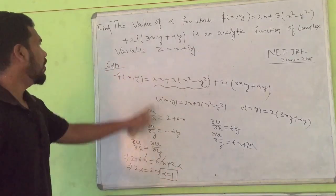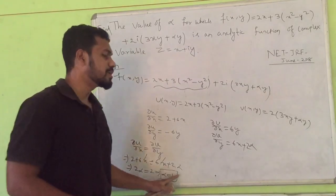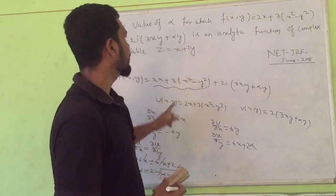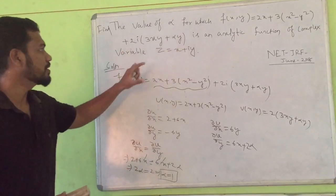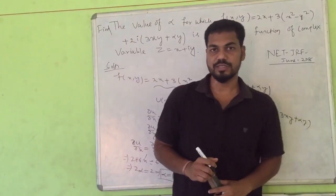So the value of alpha for which the function should be analytic is 1. In this way, you can find out the solution of this type of problem. If this video is helpful for you,